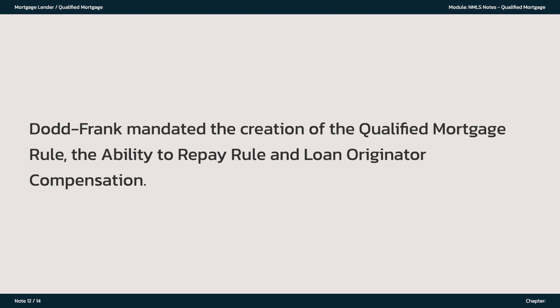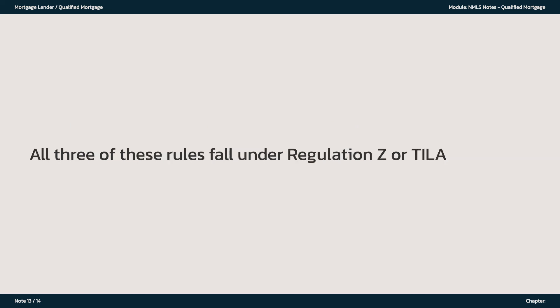Dodd-Frank mandated the creation of the Qualified Mortgage Rule, the Ability to Repay Rule, and loan originator compensation. All three of these rules fall under Regulation Z — TILA law.